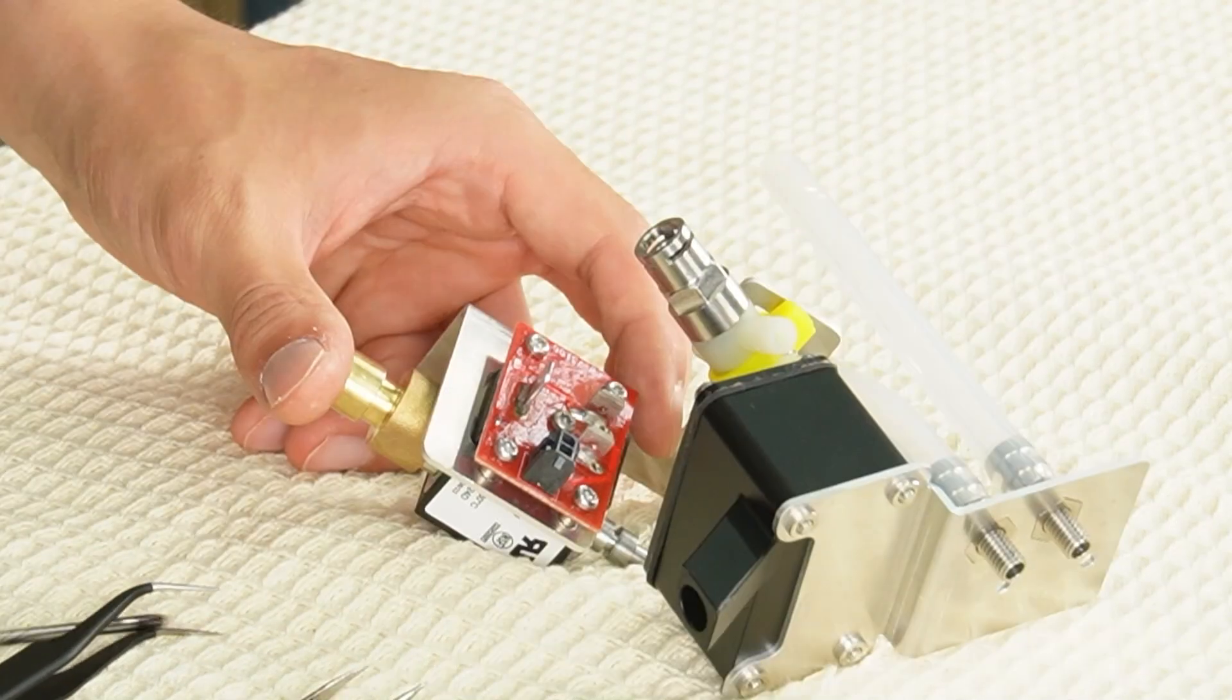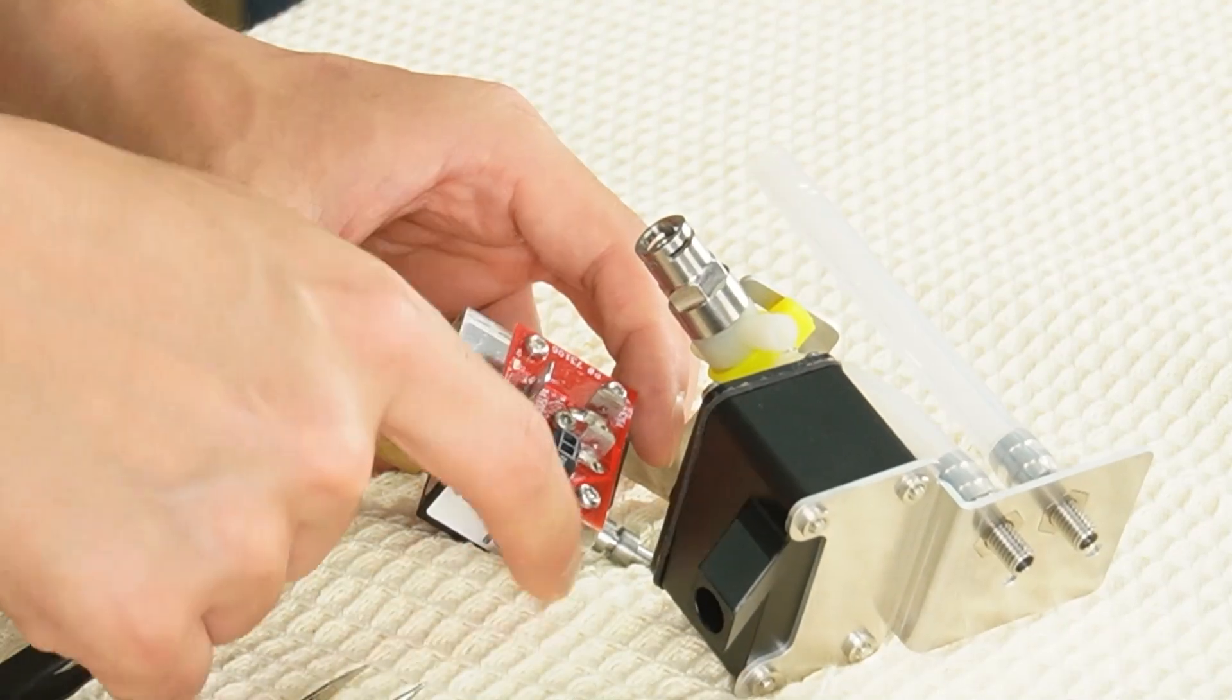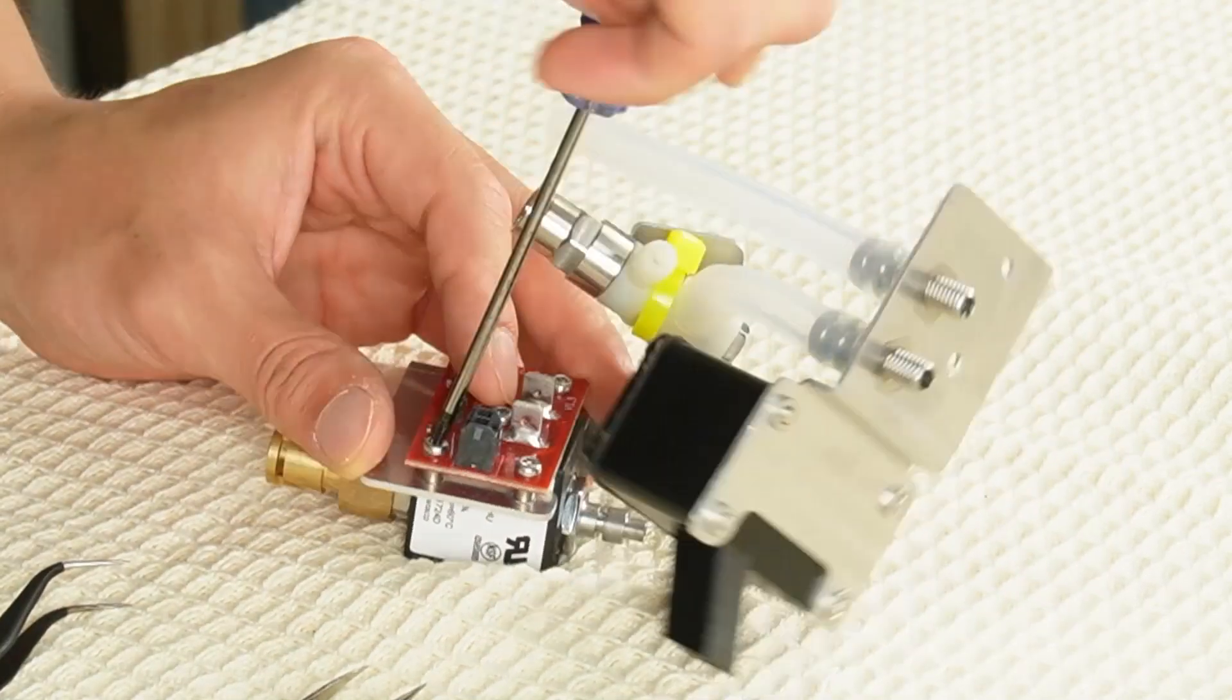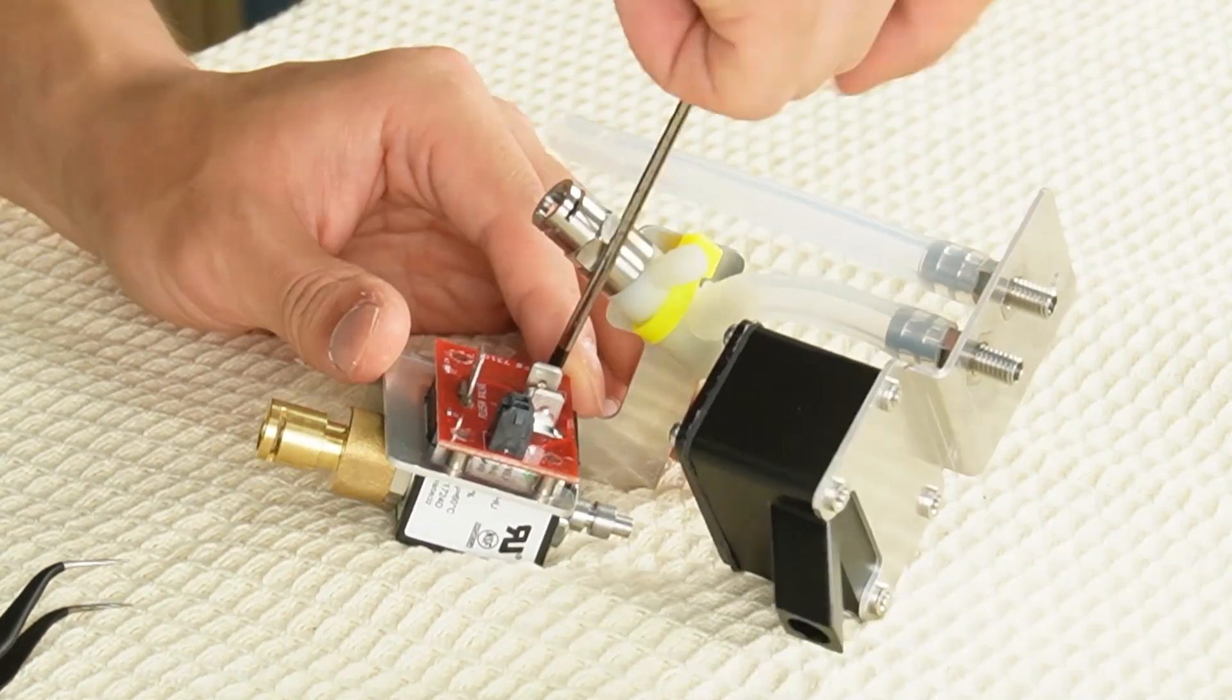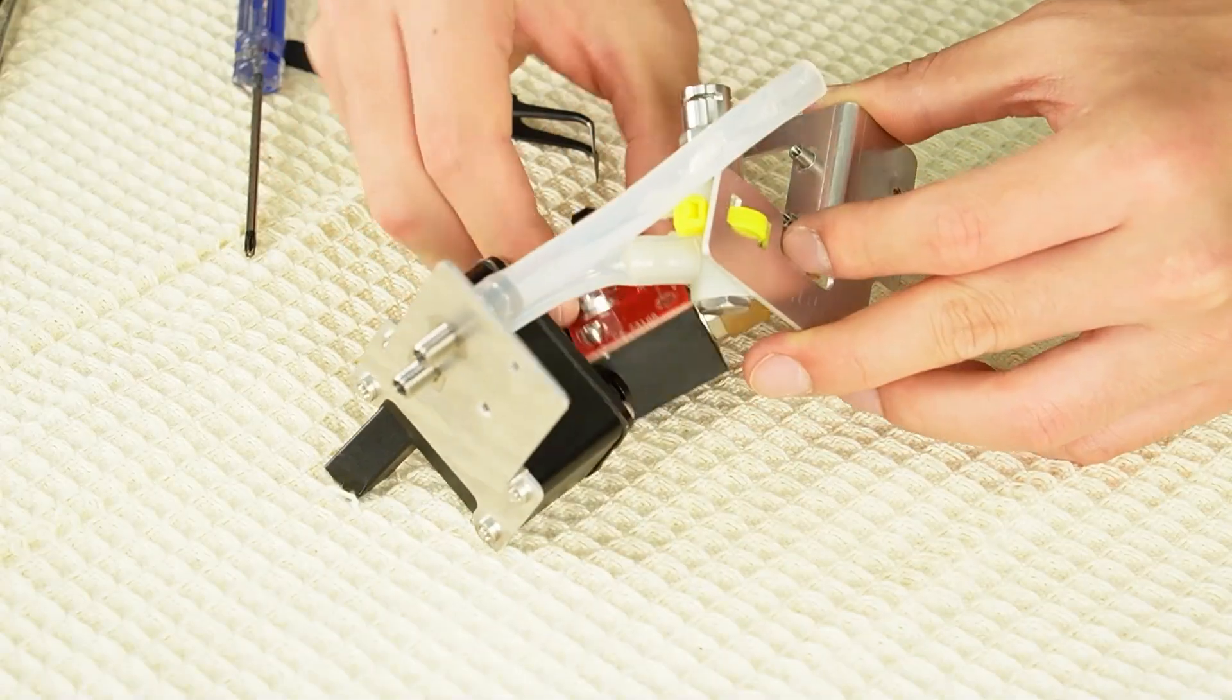Then remove the five screws that secure the valve to the mount, using a T10 Torx or PH2 screwdriver by screw type, and detach it from the mount.